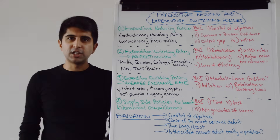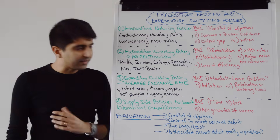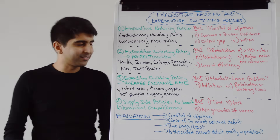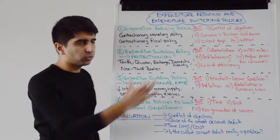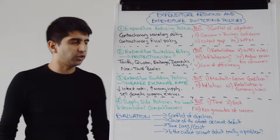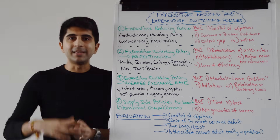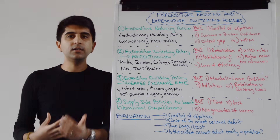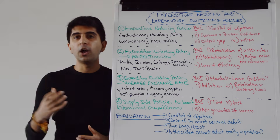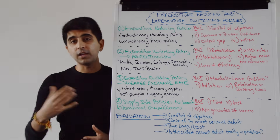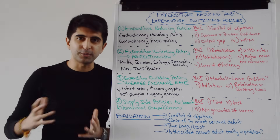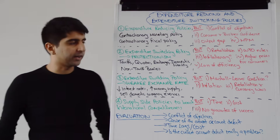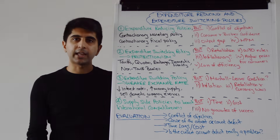Another expenditure switching policy is to weaken the exchange rate. A weak exchange rate means imports become more expensive and exports become cheaper — WIDEC. With more expensive imports, demand for imports will decrease and import expenditure will decrease. If exports are cheaper, demand for exports will increase and revenues generated from exports will increase, helping to improve the trade position in the current account — given that the trade balance is the biggest part of the current account.